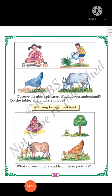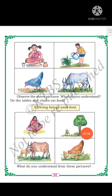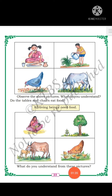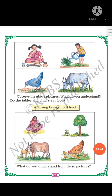Next, see here. What do you understand from this picture? Here you can see a mother and a baby, a tree and a small plant, a cow and calf, and here you can see hen and chicks. By these pictures, what can you understand? We can understand that living beings give birth to their young ones.